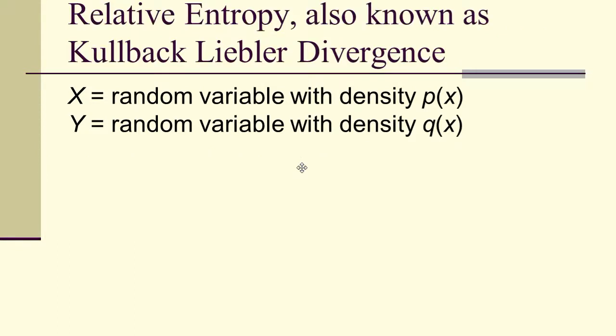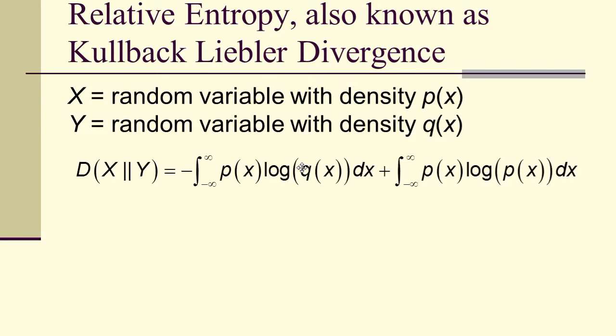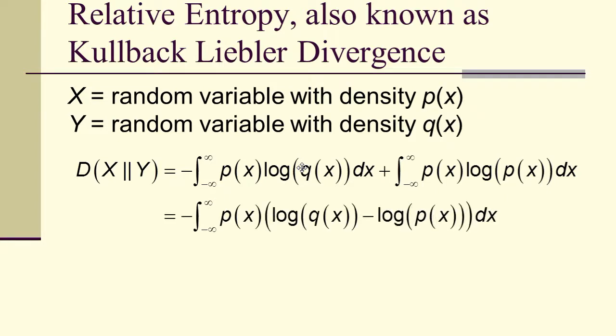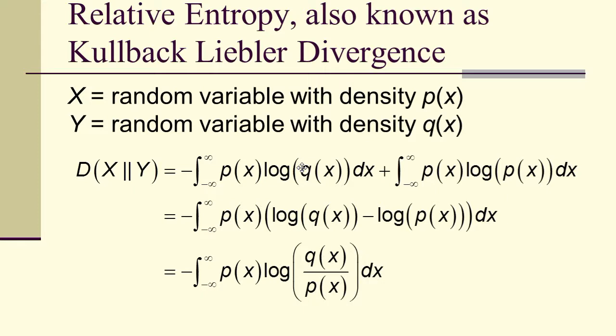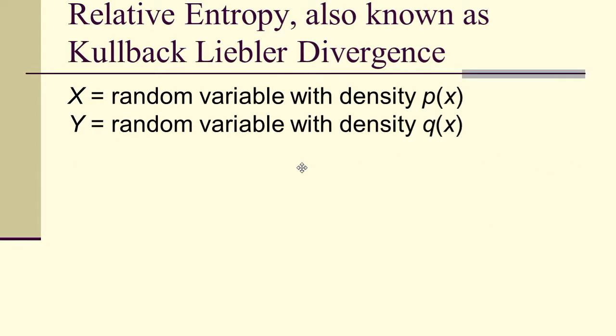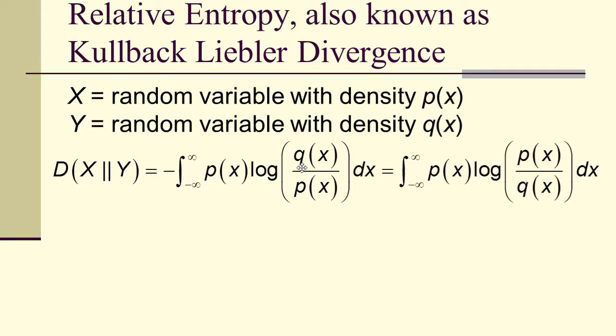Another approach: maybe we could use relative entropy, also known as Kullback-Leibler divergence. What we do there is we keep p(x) used as the probability density the same in both, but in one we use the density p for x and in the other we use density q for y. When we do that, we get a difference of logarithms, giving us the negative of the integral from −∞ to ∞ of p(x) log(q(x) / p(x)) dx. Now the units have canceled, and we have a perfectly valid information-theoretic expression.